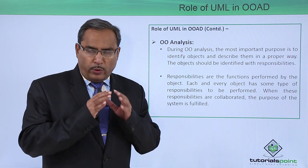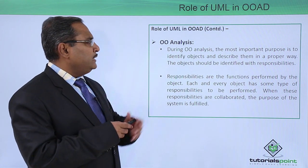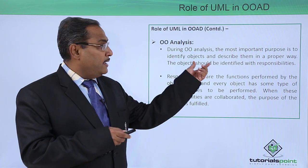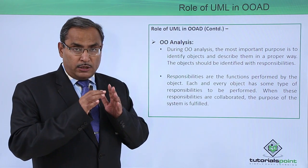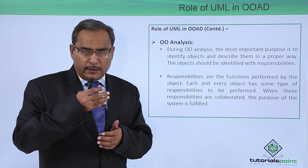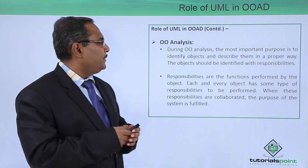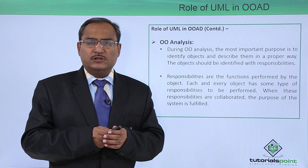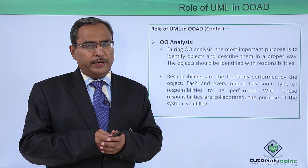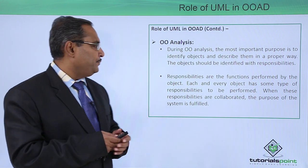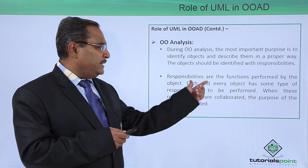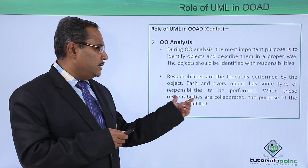Let us go through these one by one, starting with object-oriented analysis. During this phase, the most important purpose is to identify the objects and describe them properly. Each object should have documentation so you can understand its purpose in the system. The object should be identified with its responsibilities — the different operations it can perform — and these responsibilities should be described in the documentation. Responsibilities are the functions performed by the object, and each object has some type of responsibilities to be performed.